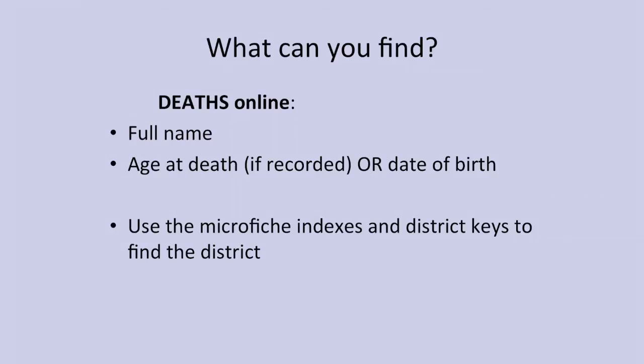If you're searching for deaths online, what can you find? You can find the full name, the age at death or the date of birth. You can also use the microfiche indexes and the district keys to find the district, just as I explained for the birth indexes.